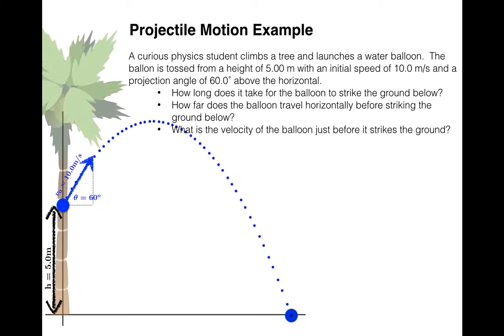For projectile motion problems, it's always helpful to remember that the motion may be distilled into the motion that's happening in the horizontal direction and the motion that's happening in the vertical direction. I like to set up two columns, X and Y, to keep the information organized. For projectile motion, the accelerations are always known. Remember that in the horizontal direction, there is no acceleration, so ax = 0.